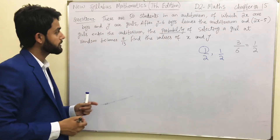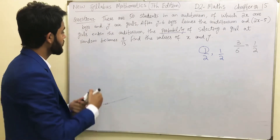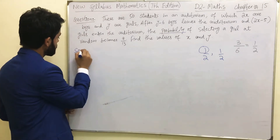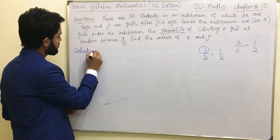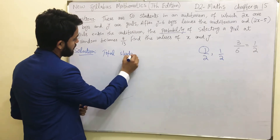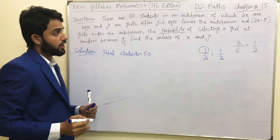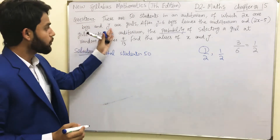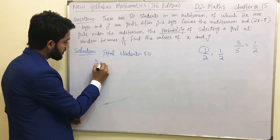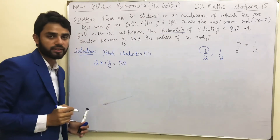Now let's read the question. There are 50 students in an auditorium. We write in our solution: total students in an auditorium equals 50. Some of these students are boys and some are girls — boys and girls together make 50. So according to the condition: boys plus girls equals 50. That is our first condition.